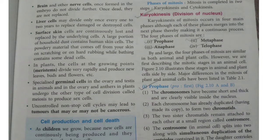A large portion of household dust contains human skin cells. The powdery material that comes off from your skin on scratching or on hard rubbing while bathing contains some dead cells. In plants, the cells at the growing points divide very rapidly and produce new leaves, buds, and flowers. Specialized germinal cells in the ovaries and testes in animals, and in the ovaries and anthers in plants, undergo the other type of cell division called meiosis to produce sex cells.